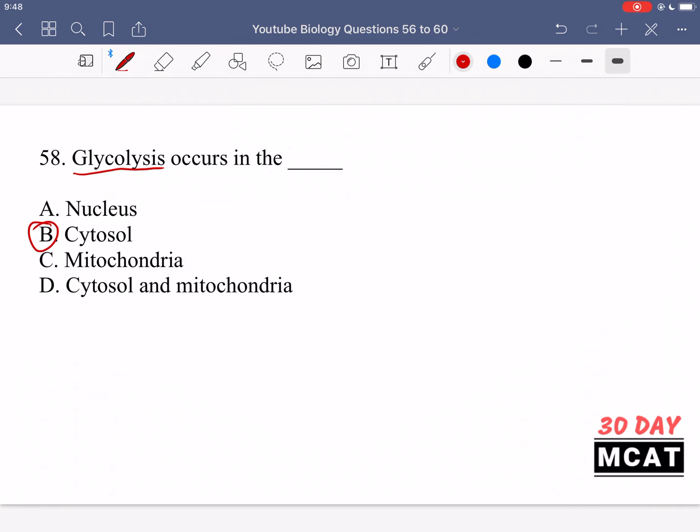It's just very important knowledge to have - where in the cell different anabolic and catabolic processes take place. Glycolysis in the cytosol. In the mitochondria we have the citric acid cycle and the electron transport chain. Gluconeogenesis occurs in both the cytosol and mitochondria, but glycolysis specifically is cytosol only.